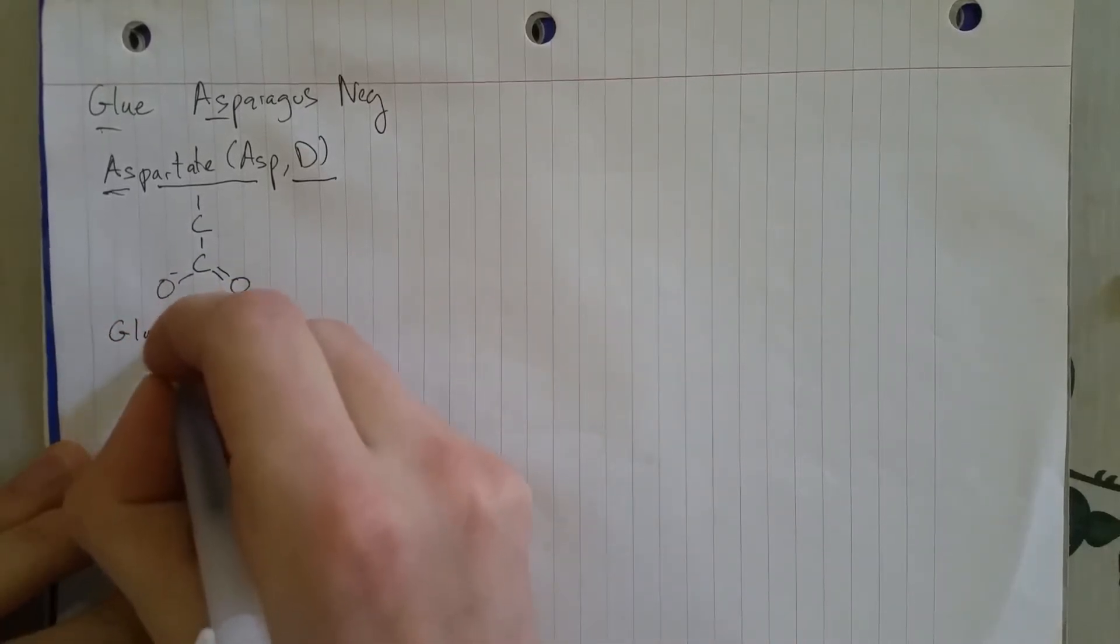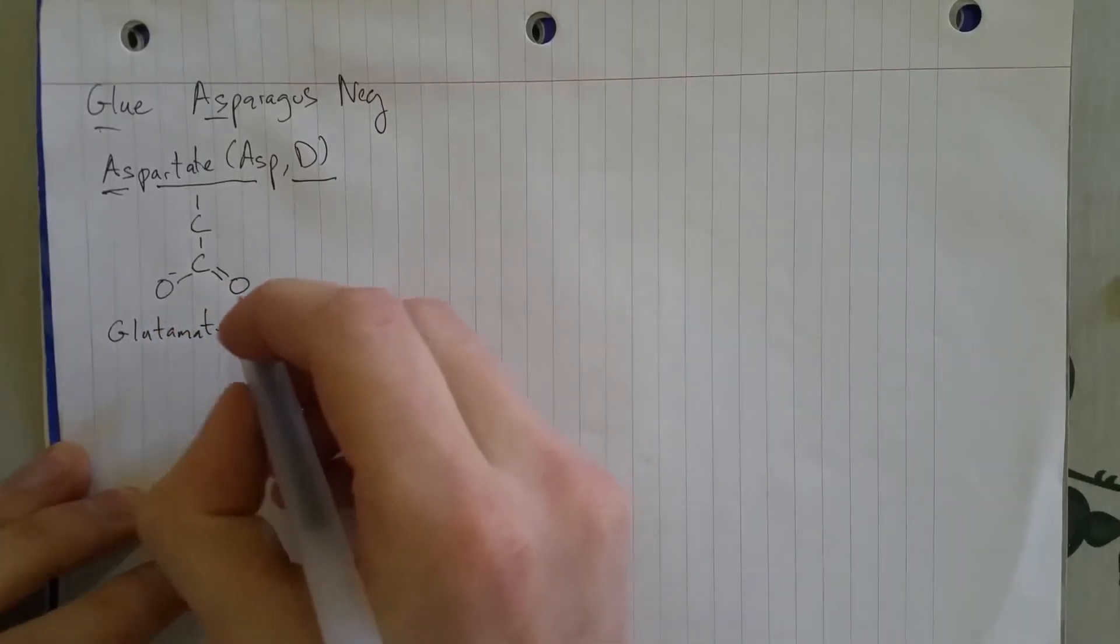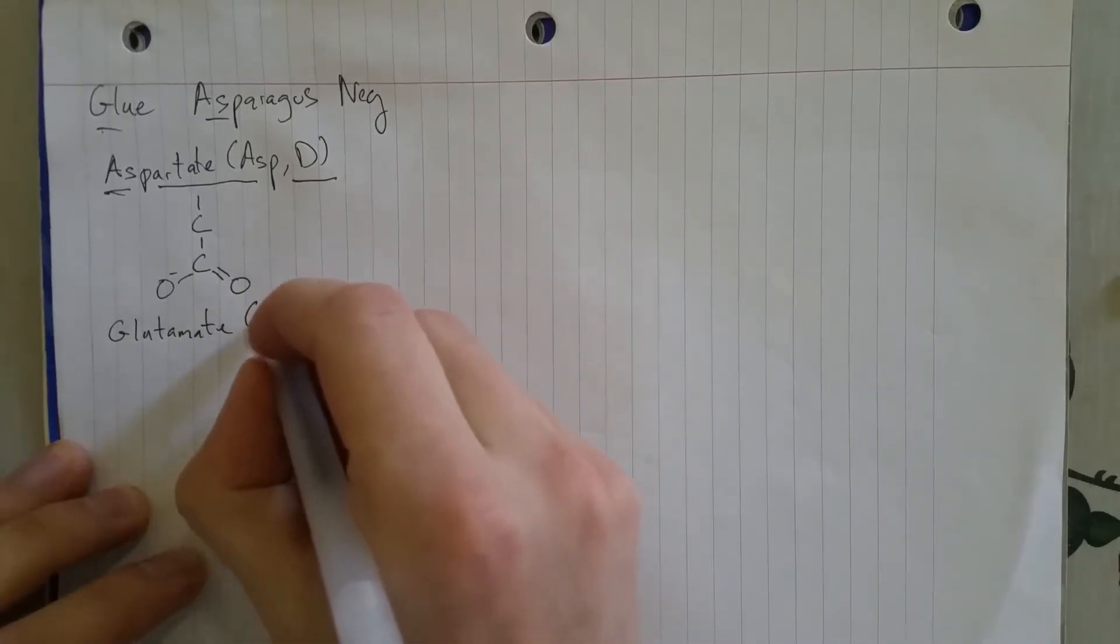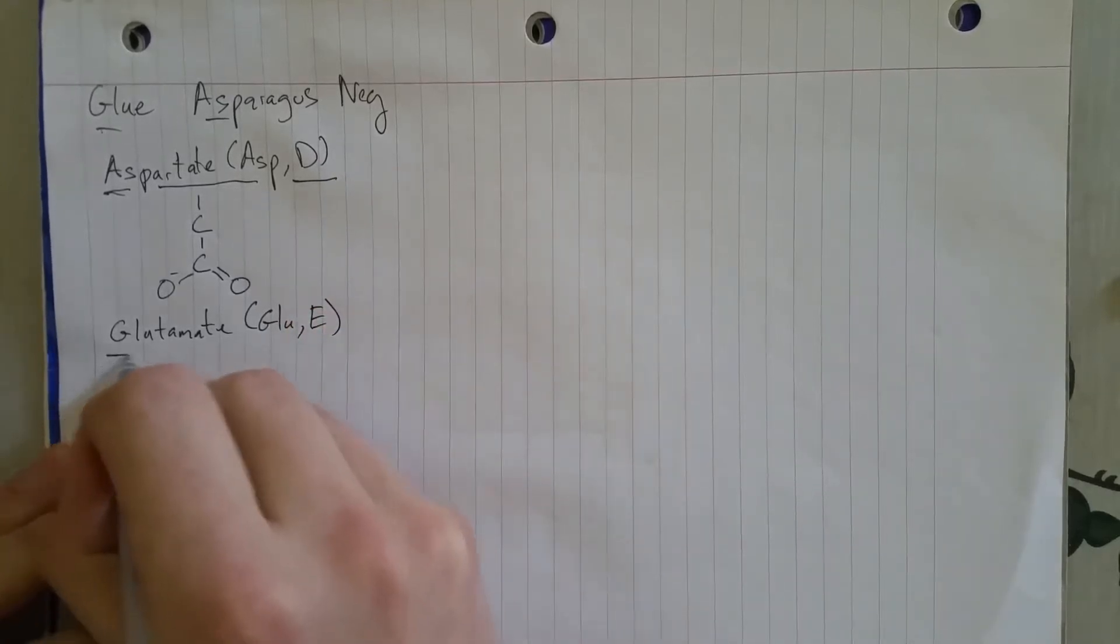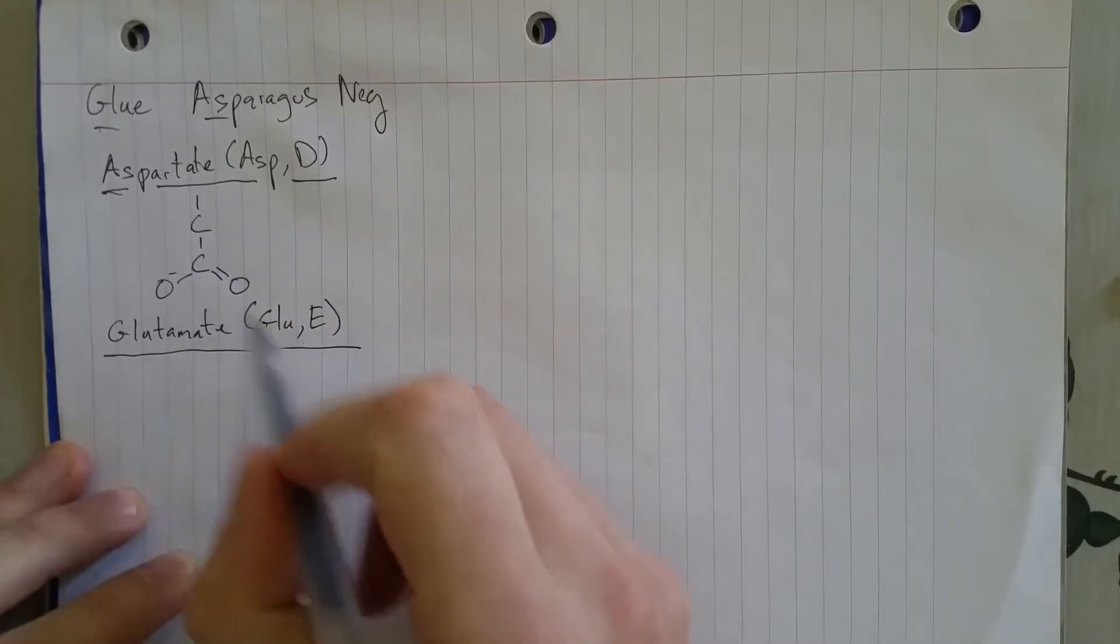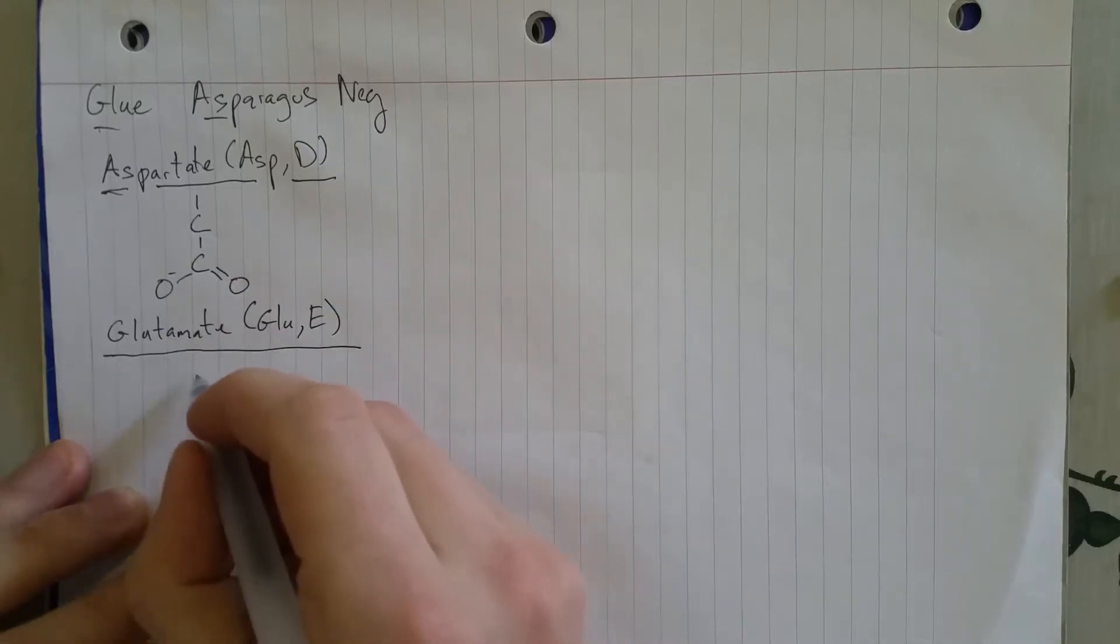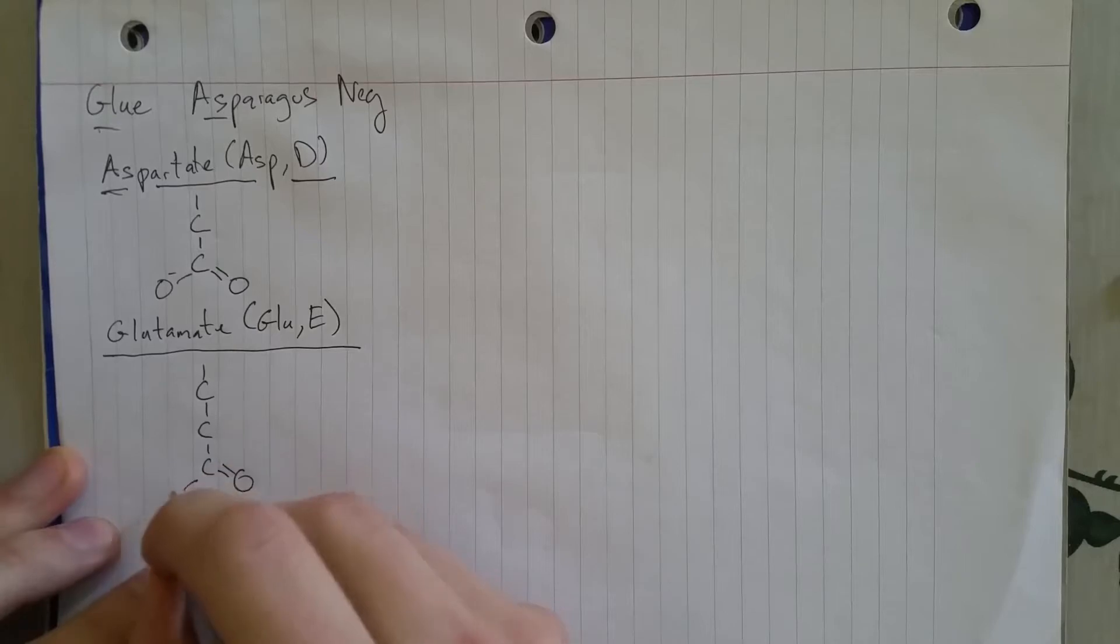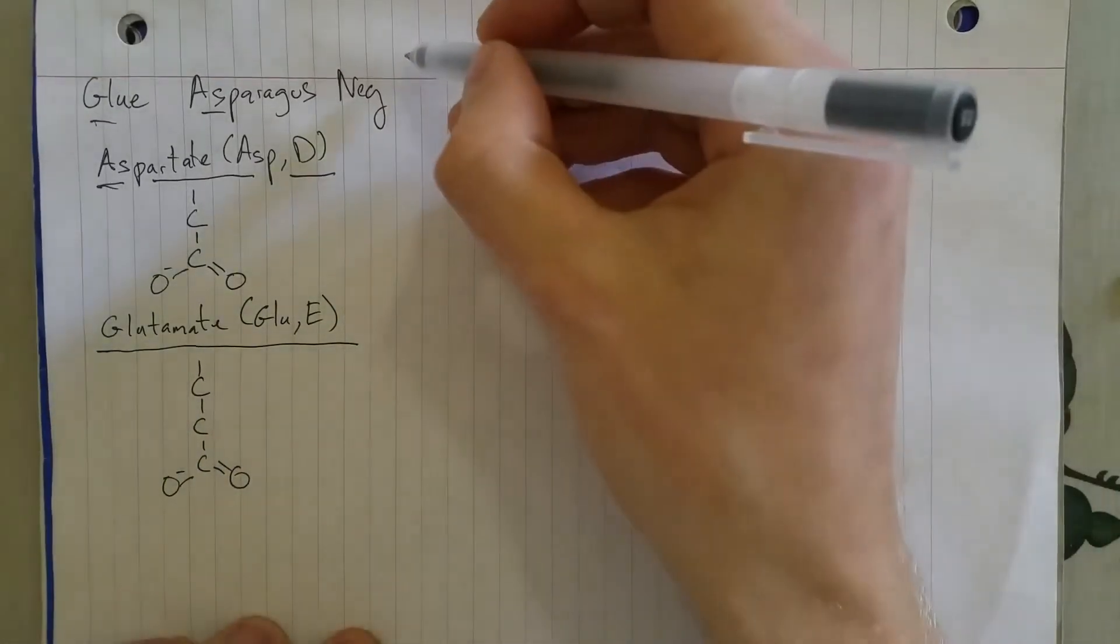Keeping in mind that all of these have beta carbons, except for the very first one, glycine. Then we have glutamate, spells glue, which is what they got in their asparagus. It's just a little bit more complicated, just got one more carbon before you have that carboxyl group. Great. So far, so good.